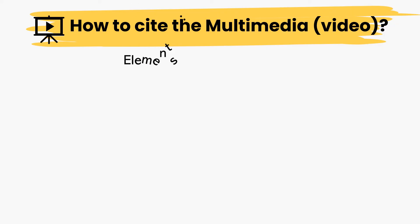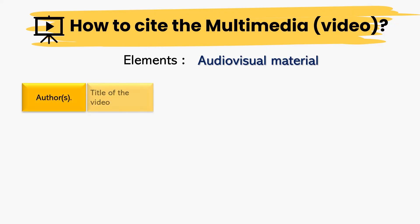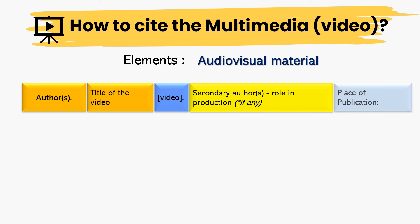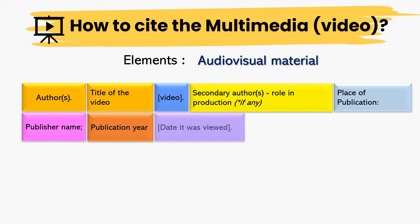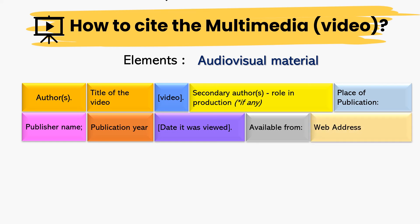To cite a video, first write the author's name, followed by the title of the video, then include the word [video] in square brackets. After that, add the secondary author if available, then the place of publication, colon, publisher name, semicolon, and publication year. Add the viewed date in square brackets — starting with the year, then abbreviated month and day. Complete the reference by including 'available from:' followed by a colon and the web address. Here is an example of how to cite the video.